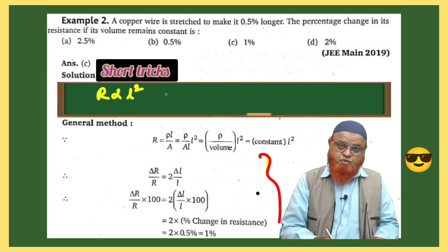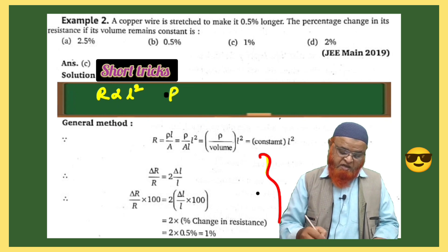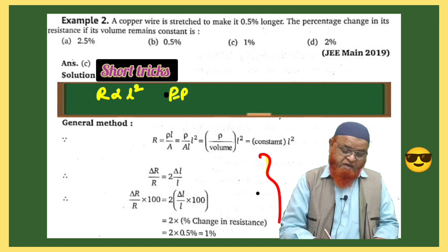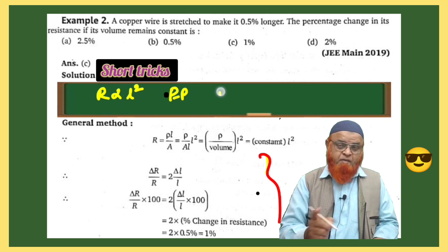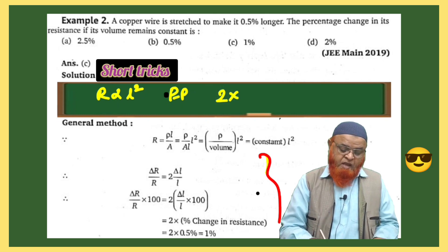Power is two. PP method means what? PP method is nothing but power percentage. What is the power here? Two. And what is the percentage here? It is 0.5. So 0.5 percent - two times 0.5 is one, so one percent you are getting.